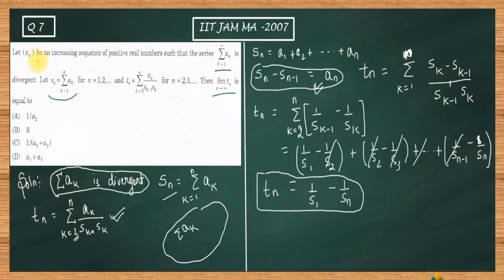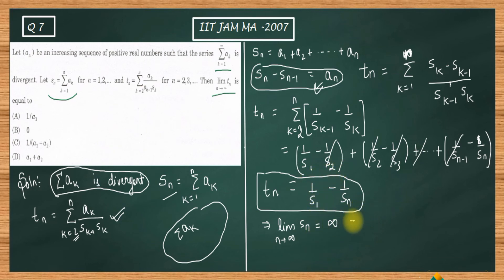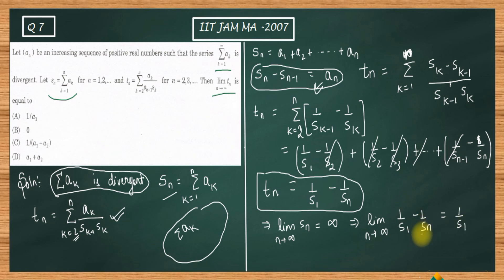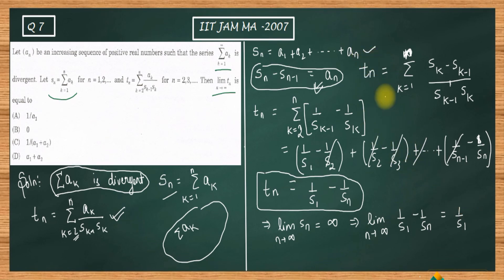Since summation of aₖ is divergent, we have limit as n→∞ of sₙ = ∞. Therefore, the limit as n→∞ of tₙ = limit of (1/s₁ - 1/sₙ) = 1/s₁ - 0 = 1/s₁. Since s₁ = a₁, we get the final answer: limit of tₙ = 1/a₁.